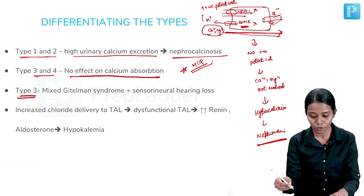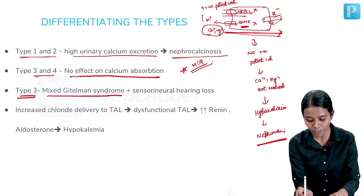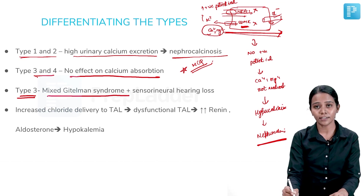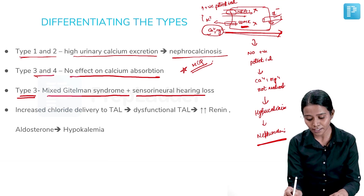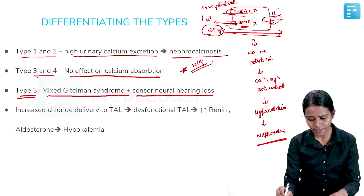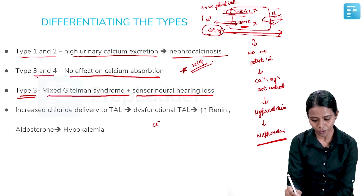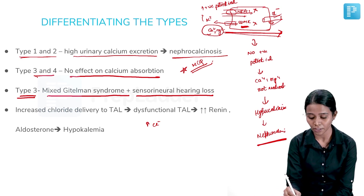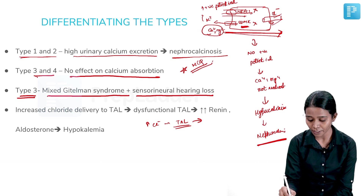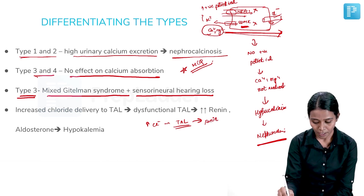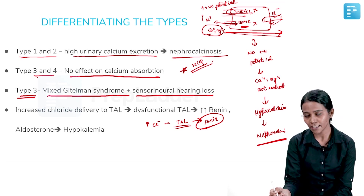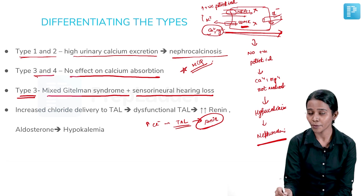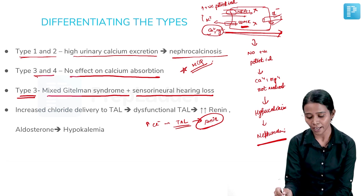Type 3, classic Bartter syndrome, is also called mixed Gitelman syndrome. These patients can have hypomagnesemia and some sensorineural hearing loss. The sodium-potassium-2-chloride transporter is not working, leading to increased chloride delivery to the thick ascending limb. The body perceives this as higher volume, constricts the afferent arteriole, and releases renin, which increases aldosterone, causing loss of potassium and H+ leading to hypokalemia and metabolic alkalosis.